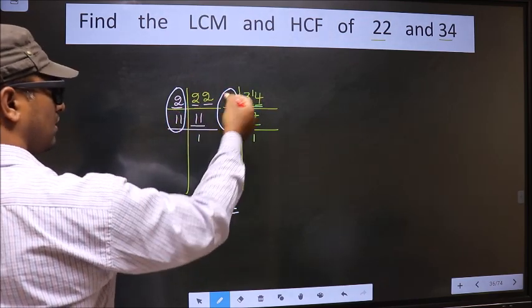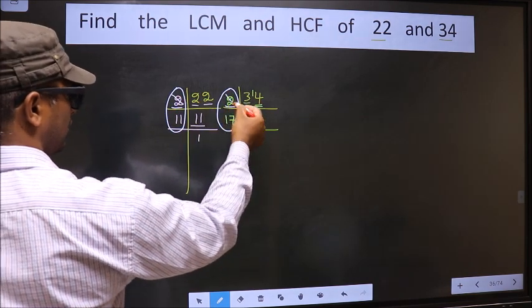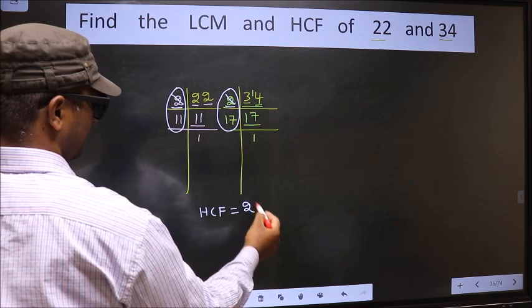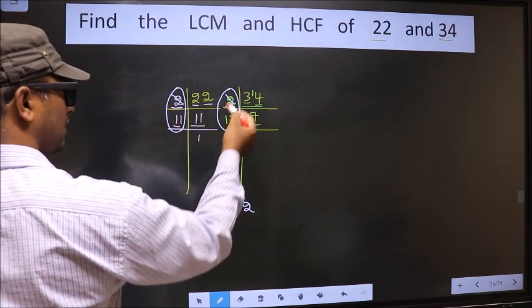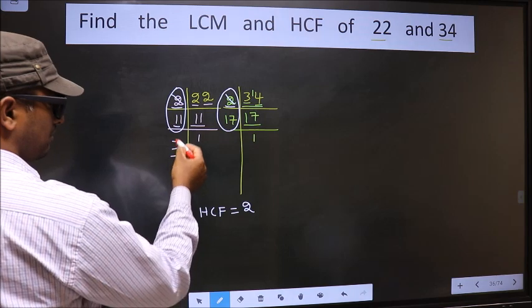Starting with the number 2. Do we have 2 here? Yes. So you cut 2 right here. Next number 11. Do we have 11 here? No.